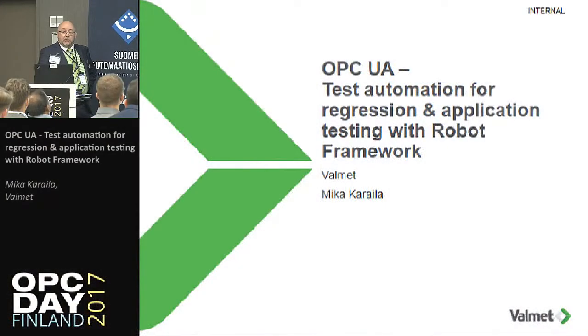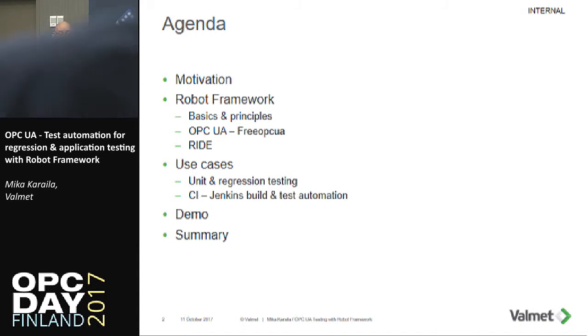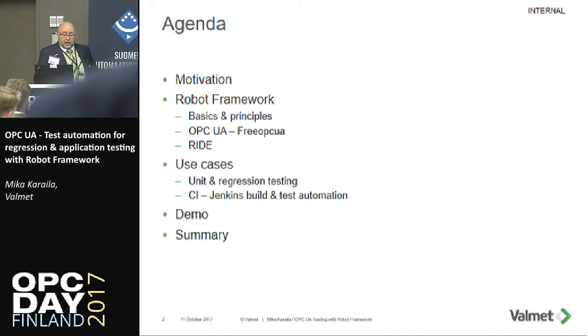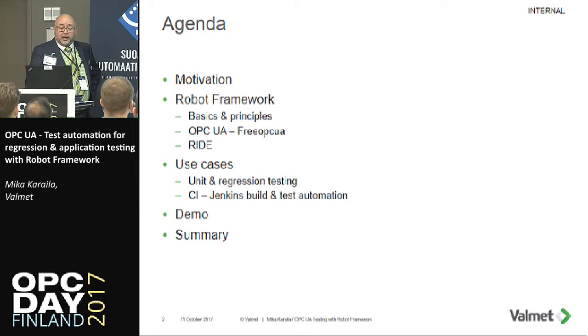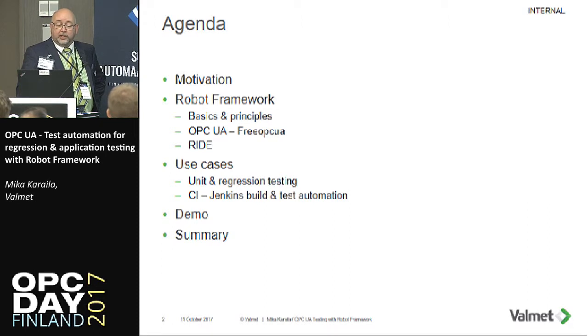Then what we have used: the OPC UA, the free OPC UA Python library, and the RIDE — the Robot Framework interactive design editor — and then some use cases, how we can use Robot Framework for unit and regression testing, a little bit about Jenkins for build and test automation, and then a short demonstration and summary.